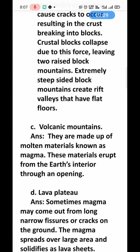C. Volcanic mountains — they are made up of molten material known as magma. This material erupts from the earth's interior through an opening. Volcanic mountains are made up of lava, and the material that forms them is magma.